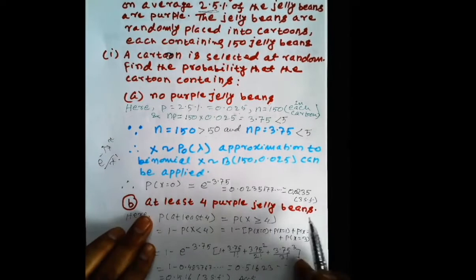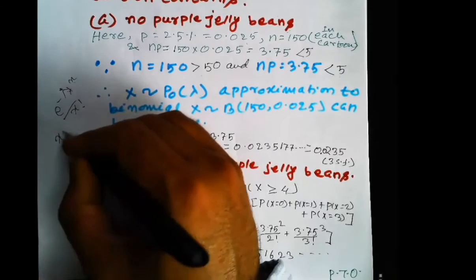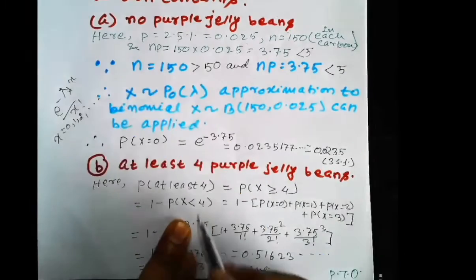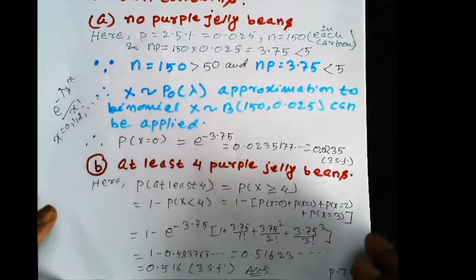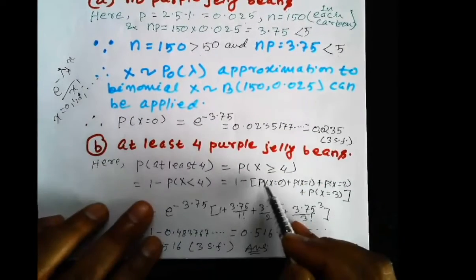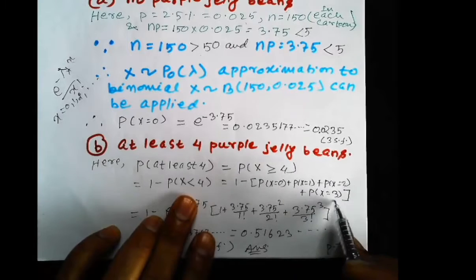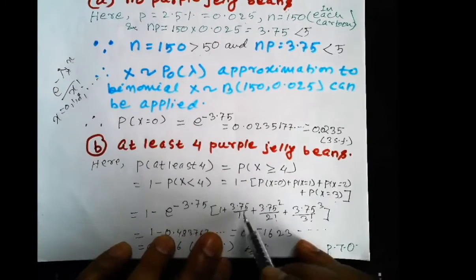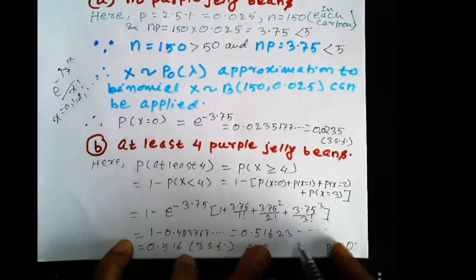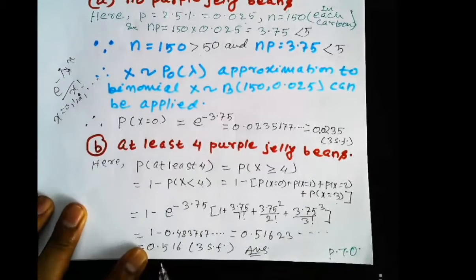Part (b): find the probability that a carton contains at least four purple jelly beans, i.e., P(X ≥ 4). Since this sum extends to infinity, we apply the complementary probability theorem: P(X ≥ 4) = 1 - P(X < 4) = 1 - [P(X=0) + P(X=1) + P(X=2) + P(X=3)]. Using the Poisson formula for each term with lambda equals 3.75 and summing, the calculator gives approximately 0.516 correct to three significant figures.